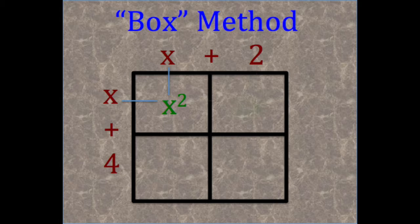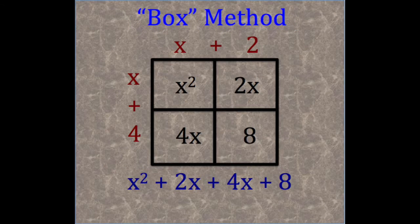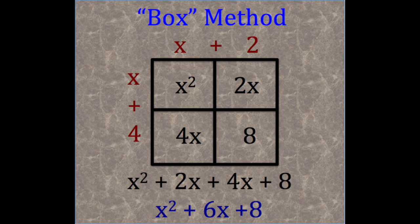We multiply the parts of our two binomials that intersect in the empty spaces of the box. And again, we add our like terms to get our final answer.